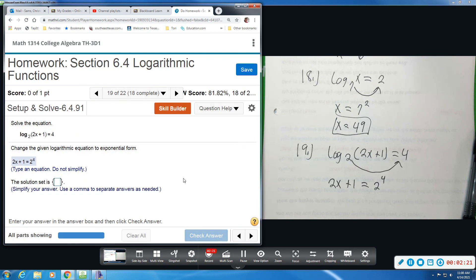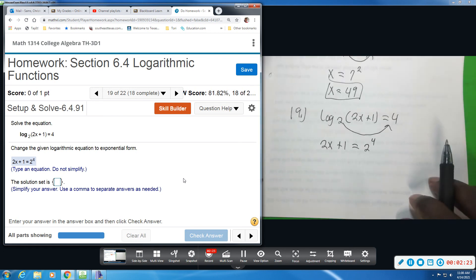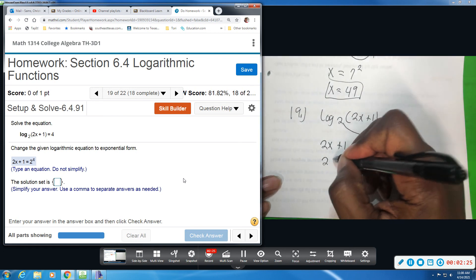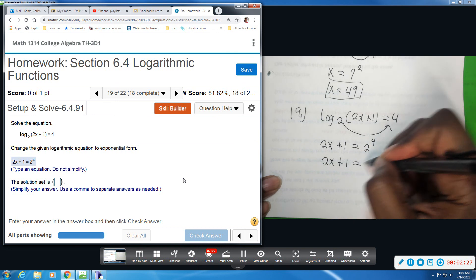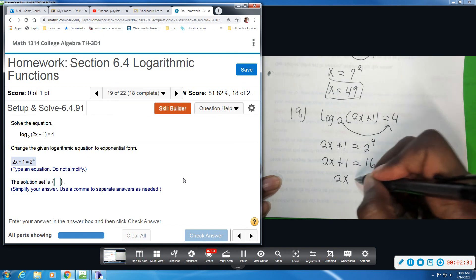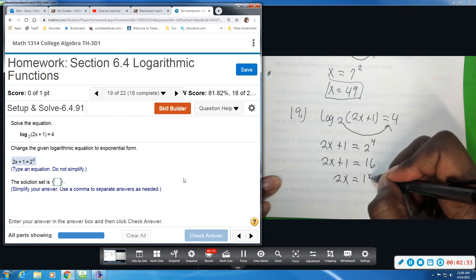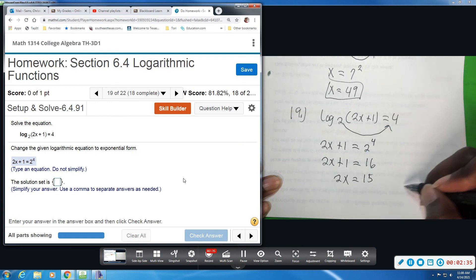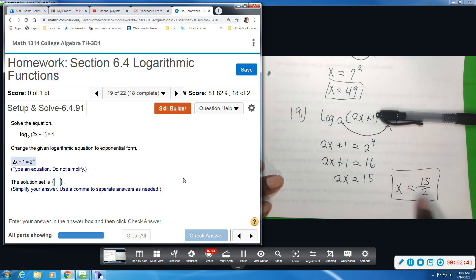And when we solve it, I'm going to continue on and get the solution. We get 2x plus 1 equals 16. Subtract 1, we get 2x equals 15. Divide by 2, that will give us x equals 15 divided by 2. And I will just leave it in that fraction form.